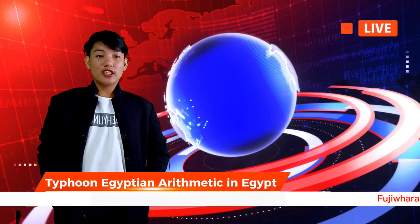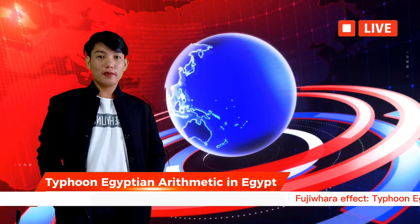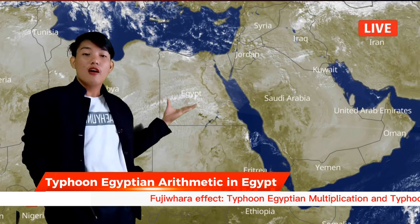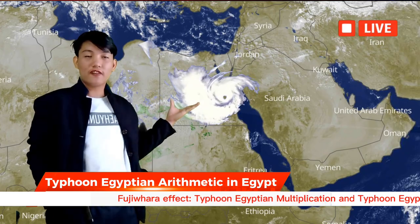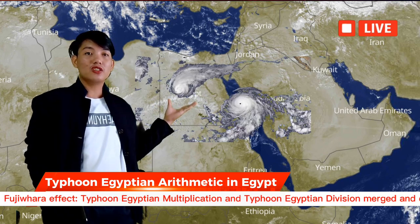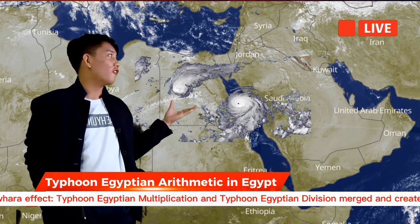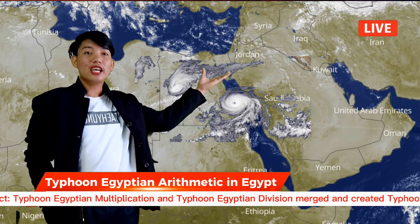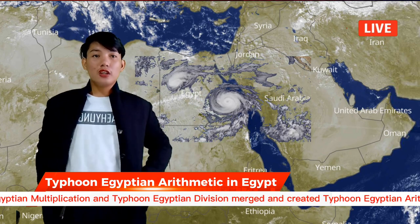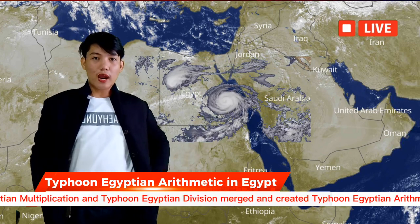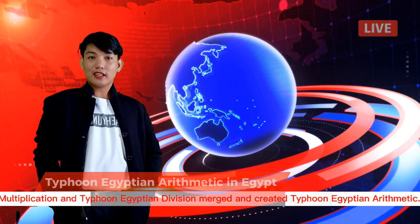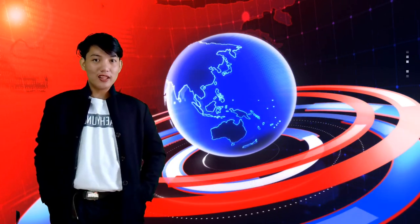Today's coverage is the weather condition in Egypt. In the middle of Upper Egypt, especially Thebes, felt the lash of Typhoon Egyptian Arithmetic — a typhoon with a double 'I' because of the merging of Typhoon Egyptian Multiplication and Typhoon Egyptian Division, a phenomenon called the Fujiwara Effect. To explain further about Typhoon Egyptian Arithmetic, Ms. Yere will take over.